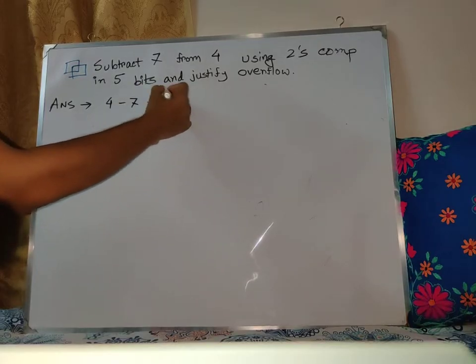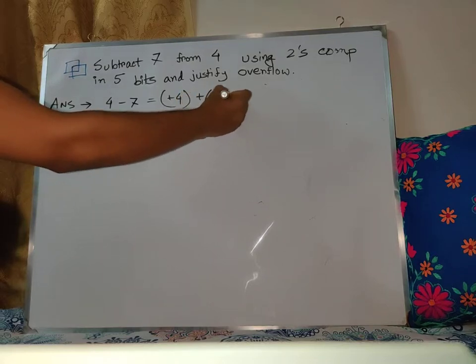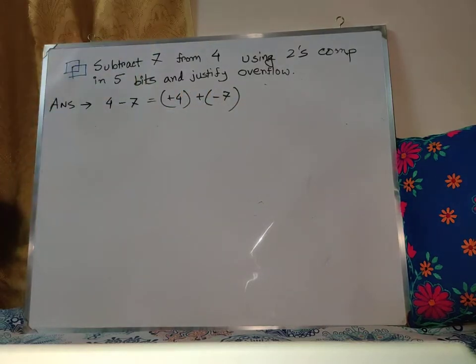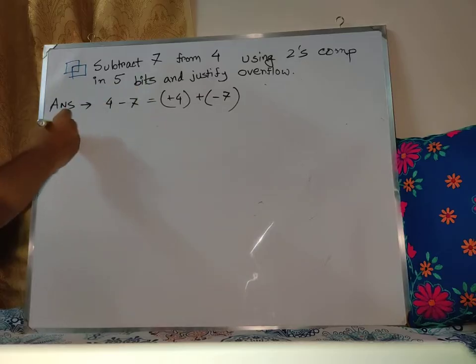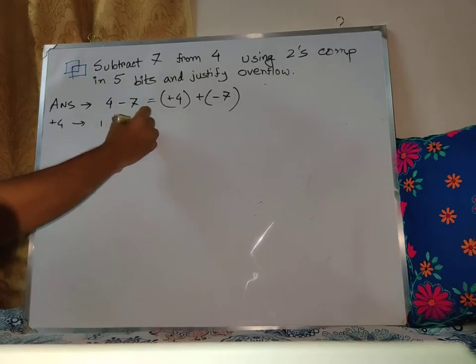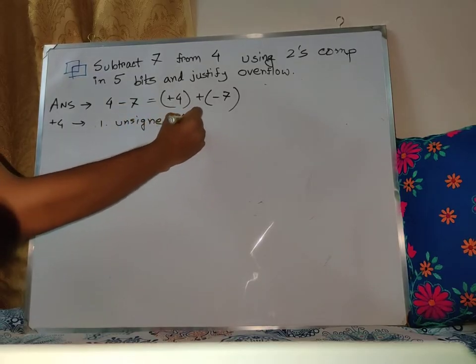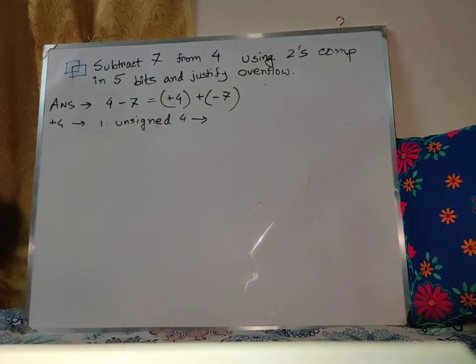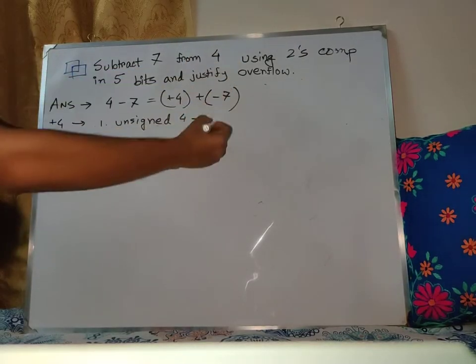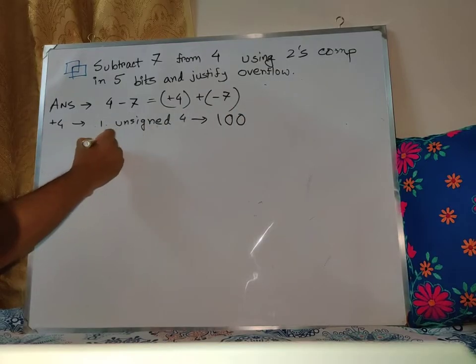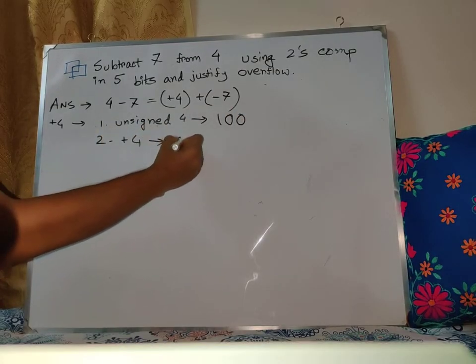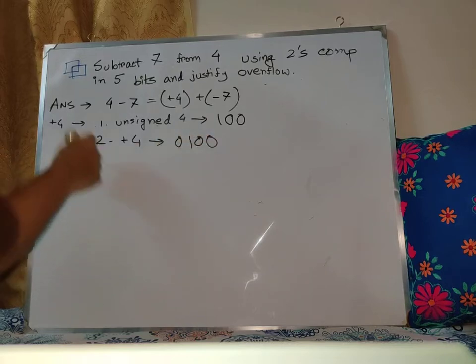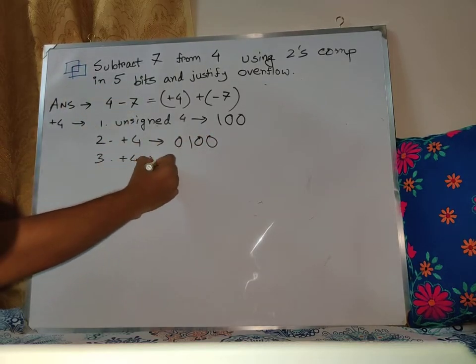We can really write it as plus 4 plus minus 7. So let's consider this one. First we need to convert plus 4. For the first number plus 4, we need to write it in binary. First thing is to write unsigned 4, so that means 100. Then plus 4 becomes 00100. So plus 4 in 5 bits is 00100.